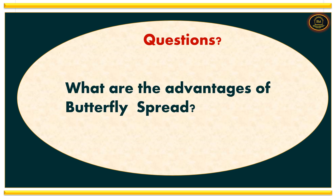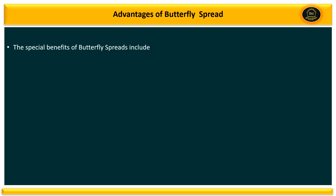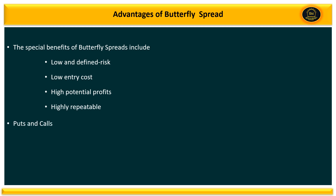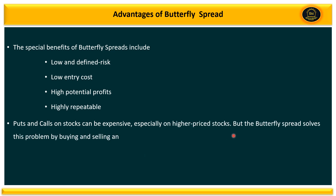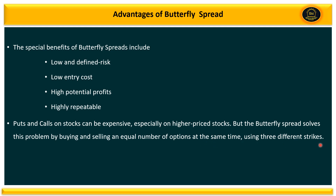What are the advantages of trading butterfly spread? The special benefits include low and defined risk, low entry cost, high potential profits, and it is highly repeatable. Call and put options on a stock can be expensive, especially on high-priced stocks, but butterfly spread solves this problem by buying and selling an equal number of options at the same time under three different strikes. In butterfly spread, the loss is limited to the purchase debit plus commission.